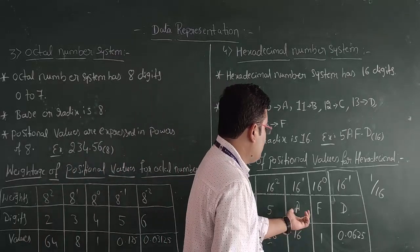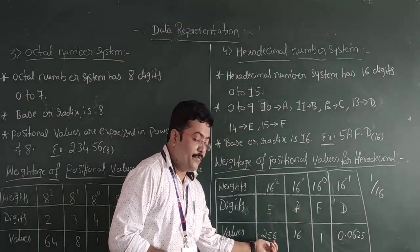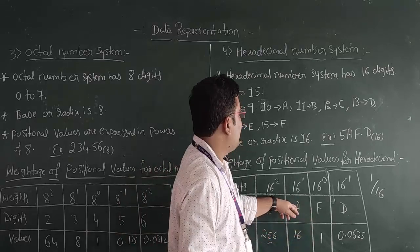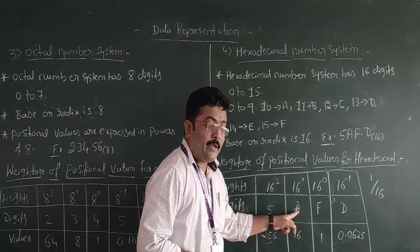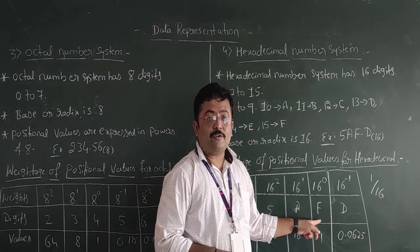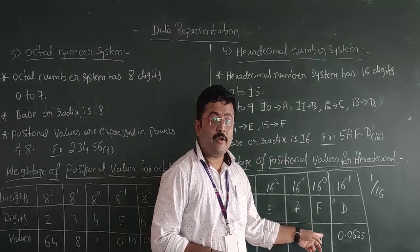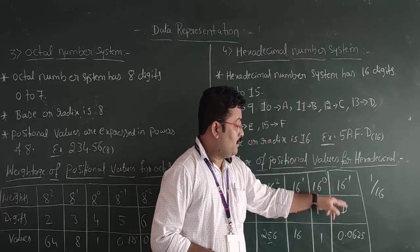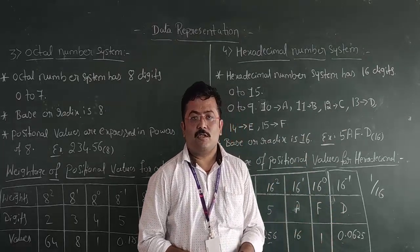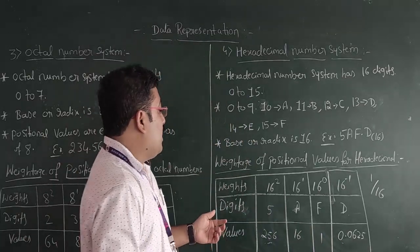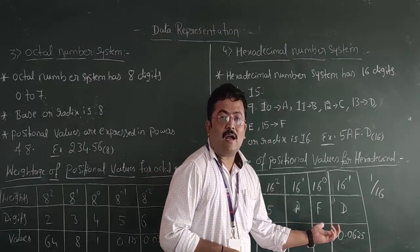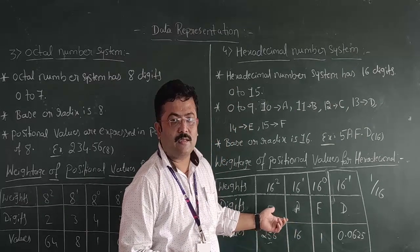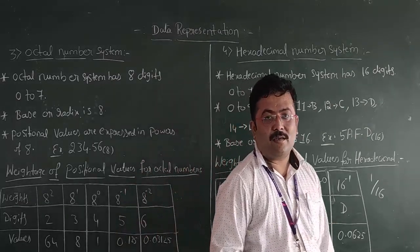So after that, we multiply: 256 into 5, 16 into A — A is nothing but 10, so 16 into 10 — then 1 into F — F is nothing but 15, so 15 into 1 — and D is nothing but 13, so 13 into 0.0625. If you multiply and add all these values, you will get the final decimal answer. So this is about the hexadecimal number system.